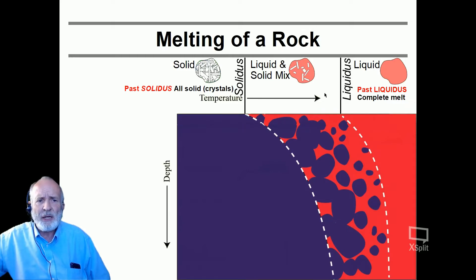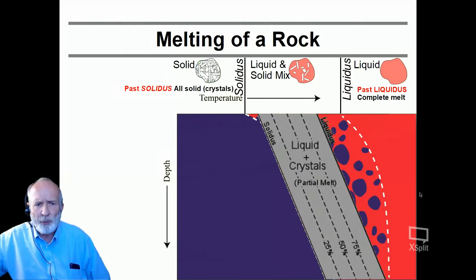Only here in the middle do we have a mix of both. And we can sometimes even estimate in our transition from a solid to a liquid or vice versa, how much melt is there. Here down in this line, it's only 25% melt. Here closer to the liquidus, we have 75% melt.